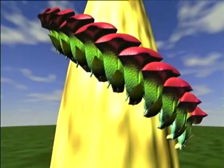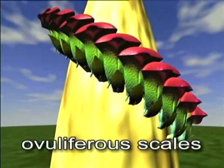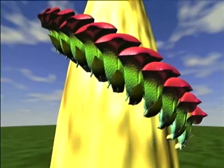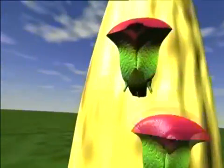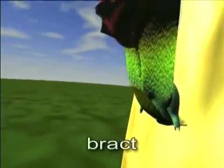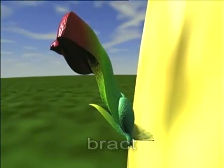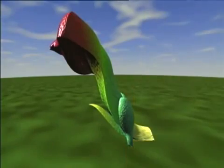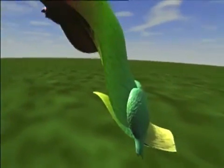The intact ovulate cone consists of numerous spirally arranged ovuliferous scales. Each ovuliferous scale has a small bract fused to its lower surface. The upper surface contains two ovules.